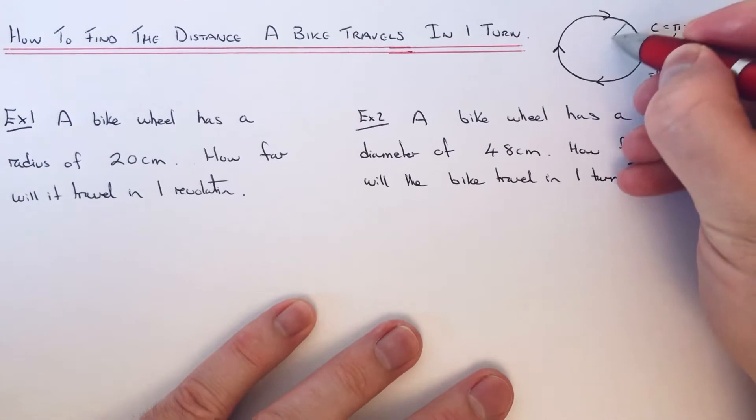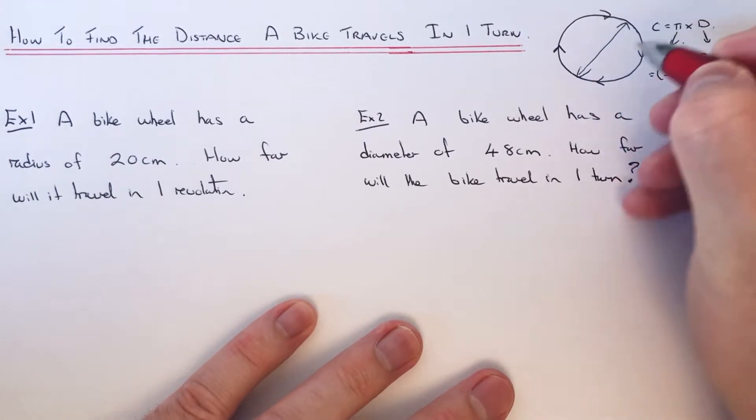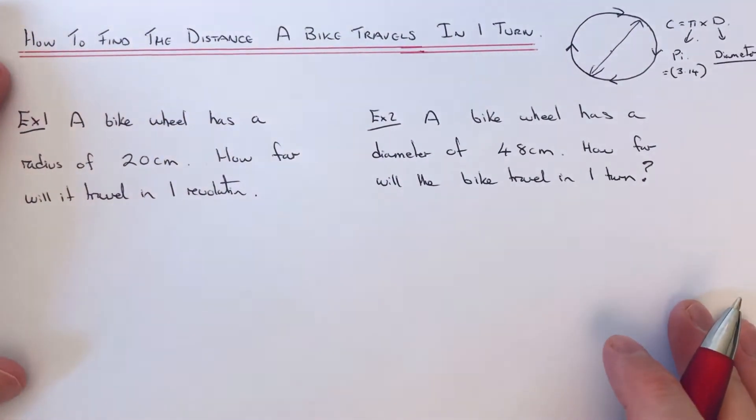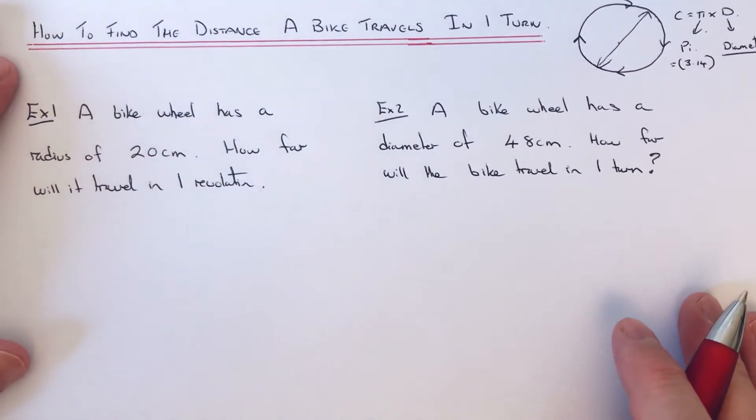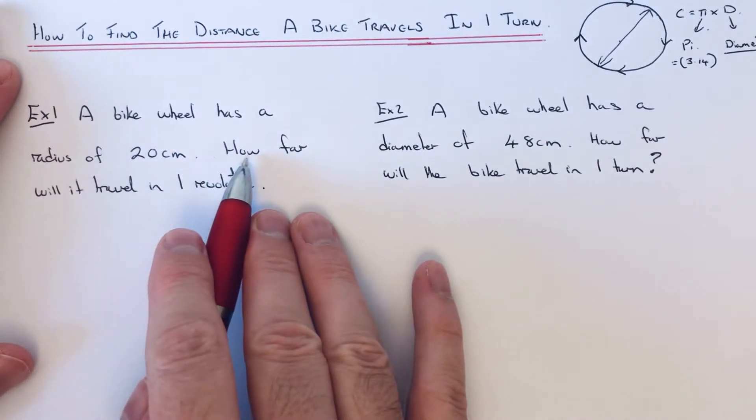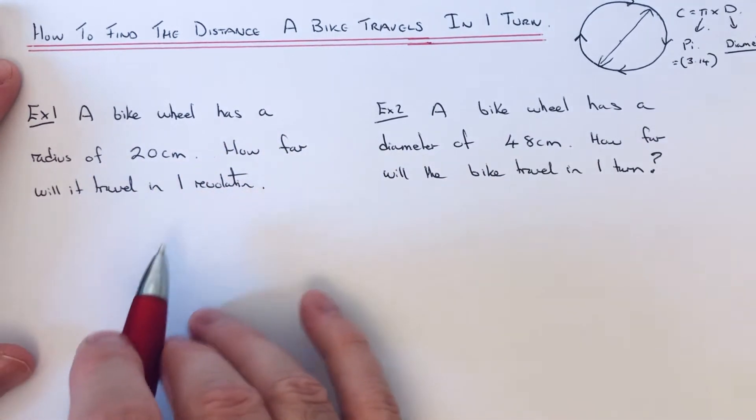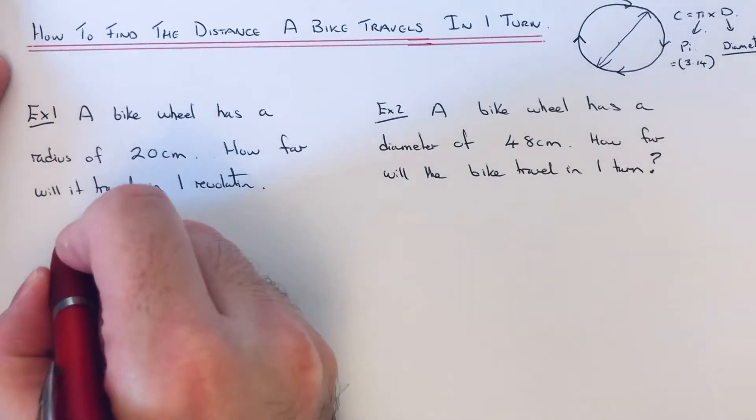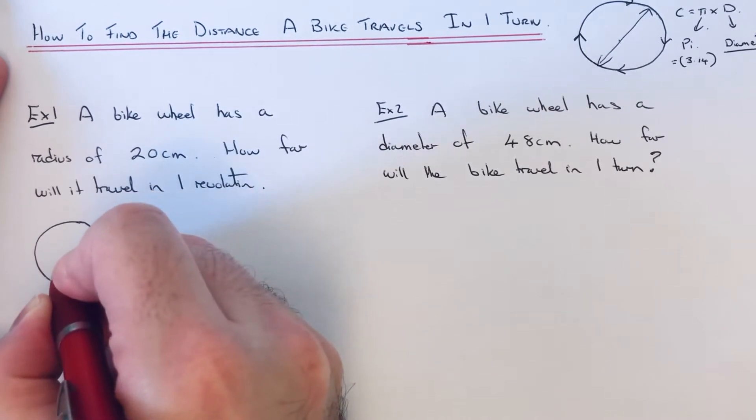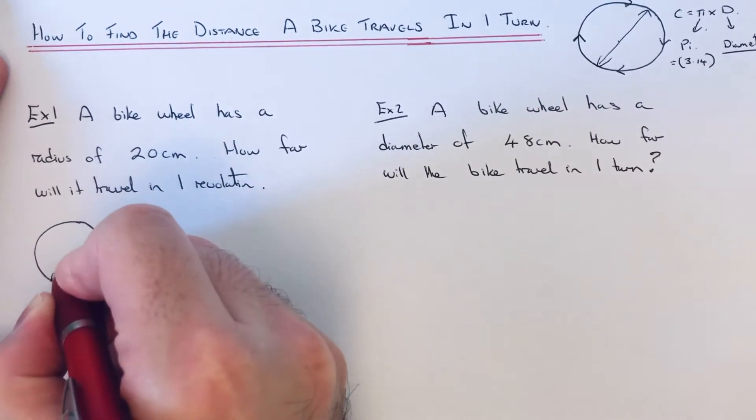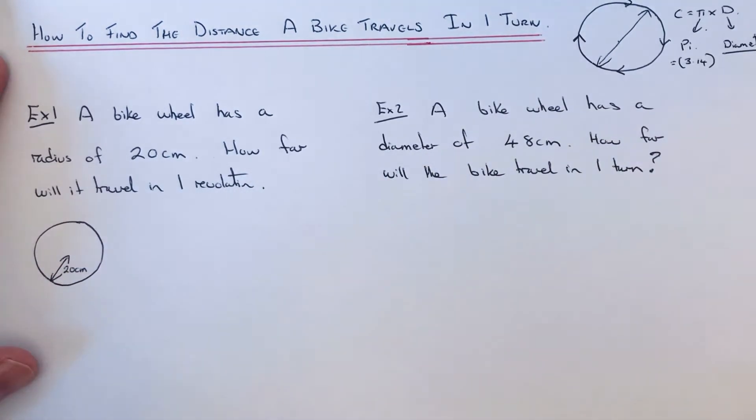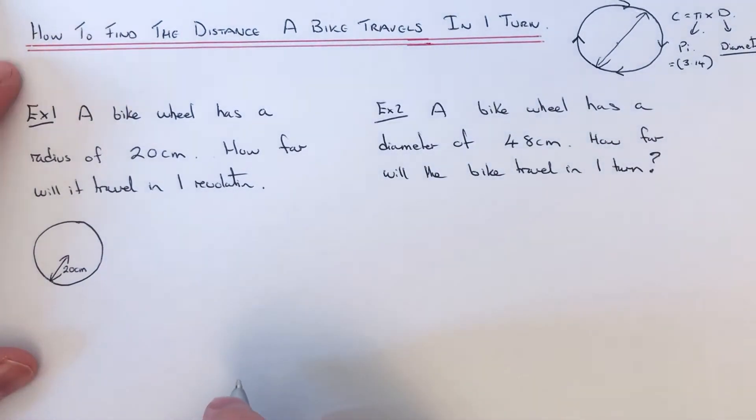distance all the way across the circle. Let's have a look at the examples. A bike wheel has a radius of 20 centimeters. How far will it travel in one revolution? I'm just going to do a quick sketch. In the question they'll give us the radius, which is halfway across the circle, 20 centimeters. To find the distance the bike wheel